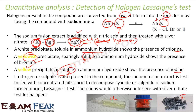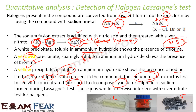Note that if nitrogen and sulfur are also present, they will interfere with the halogen test. Therefore, the sodium fusion extract is first boiled with nitric acid to decompose cyanide ions and sulfide ions, and then the normal silver nitrate test is used.